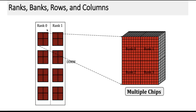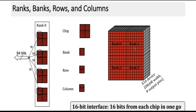This DIMM has rank 0 and rank 1 on both faces. Inside rank 0 there are chips, and when you zoom into a particular chip you will find a chip structure with several banks — for example, bank 0, bank 1, bank 2, and bank 3. These banks are the DRAM. A bank is further divided into rows and columns.